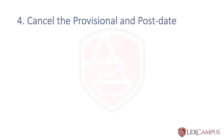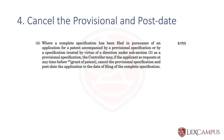The fourth thing to remember in Section 9 is that you can cancel the provisional and post-date the application. Section 9 states that when a complete has been filed in pursuance of an application accompanied by a provisional under Section 9(1), or by a specification treated as a provisional under subsection 3 (the purported rule), the controller may at any time before the grant of the patent cancel the provisional application and post-date the application.